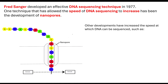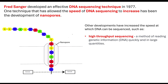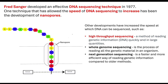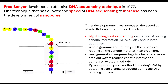Other developments have increased the speed at which DNA can be sequenced, such as high throughput sequencing — a method of reading genetic information quickly and in large quantities. There are others: whole genome sequencing, next generation sequencing, and pyrosequencing. However, in your specification, you only really need to be able to state high throughput sequencing and the Sanger technique with DNA sequencing.